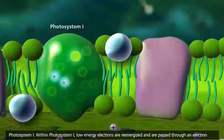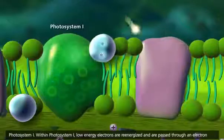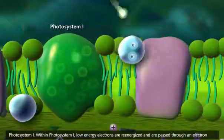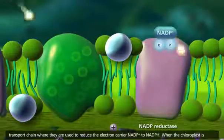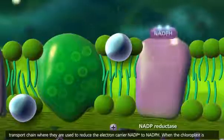Within Photosystem I, low-energy electrons are re-energized and are passed through an electron transport chain where they are used to reduce the electron carrier NADP plus to NADPH.